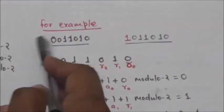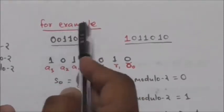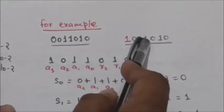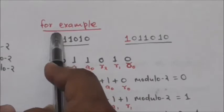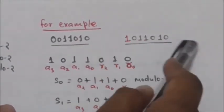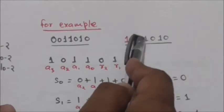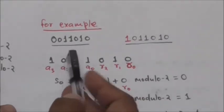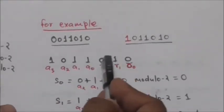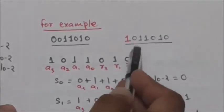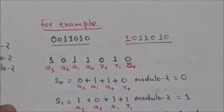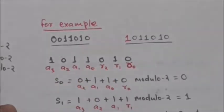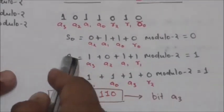Now suppose the sender sent the code word 0011010, but this leftmost bit was changed during transmission. So the receiver received the code word 1011010. In this received code word: a3 is 1, a2 is 0, a1 is 1, a0 is 1, r2 is 0, r1 is 1, and r0 is 0. Now when this code word is received, we will evaluate the values of s2, s1, and s0.